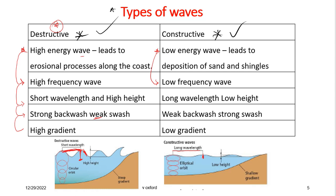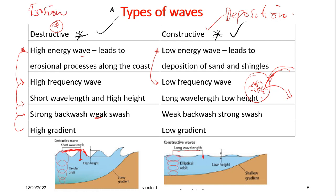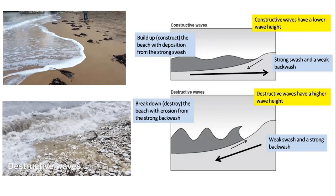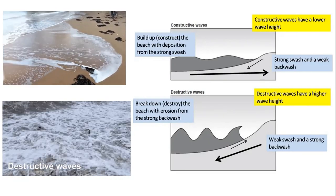The constructive wave has a low gradient, so it has a gentle slope. The constructive wave has a strong swash, so as it comes to the coast it brings sand, shingles, and materials with it. However, it has a weak backwash, so it doesn't have sufficient energy to take those materials back, leading to deposition. So constructive waves normally lead to deposition, while destructive waves normally lead to erosion of the coast.